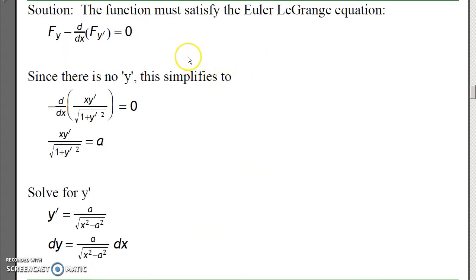To solve that, throw your functional into the Euler-Lagrange equation. Again, there is no y, which means that minus d/dx of Fy prime equals 0. The partial with respect to y prime is xy prime over square root of 1 plus y prime squared. Integrating has to be a constant. So rearrange, solve for y prime. I get y prime as a function of x. y prime is dy/dx. Bring the dx to the right, and I can now integrate. I've got a function of y as a function of x.